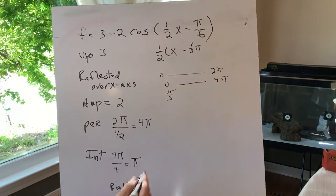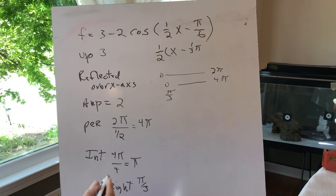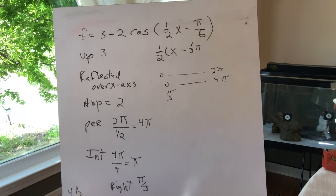And 4π plus 1/3, that'd be 4 and 1/3. Change that to an improper fraction: 12 plus 1 is 13, so 13π/3.